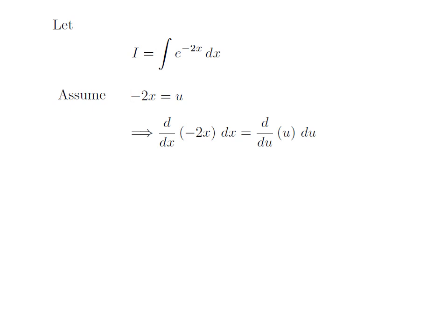Taking differential of both sides, we get differentiation of minus 2x with respect to x into differential of x is equal to differentiation of u with respect to u into differential of u. Differentiation of minus 2x with respect to x is equal to minus 2, and differentiation of u with respect to u is equal to 1. So we are left with minus 2 into differential of x is equal to differential of u. Taking minus 2 to the other side, differential of x is equal to minus 1 upon 2 into differential of u.